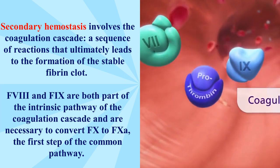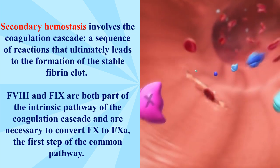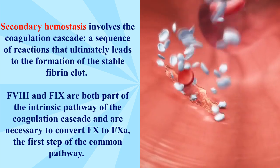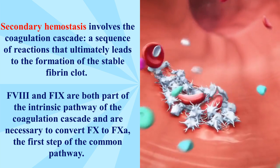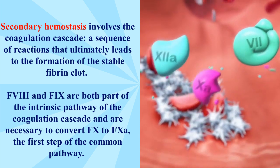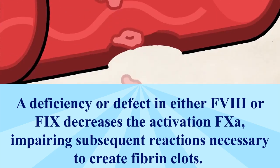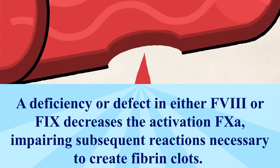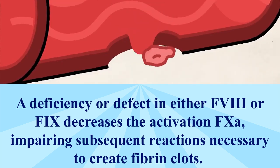Factor 8 and factor 9 are both part of the intrinsic pathway of the coagulation cascade and are necessary to convert factor 10 to factor 10a, the first step of the common pathway. A deficiency or defect in either factor 8 or factor 9 decreases the activation of factor 10a, impairing subsequent reactions necessary to create fibrin clots.